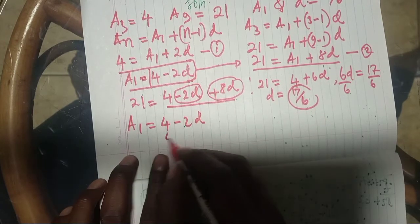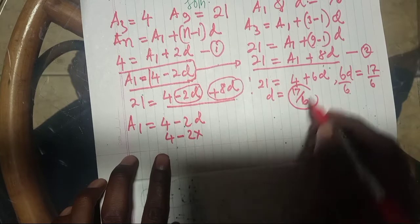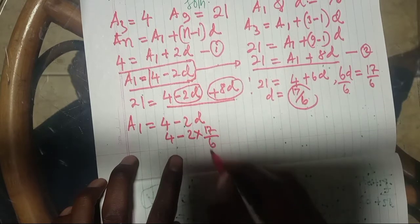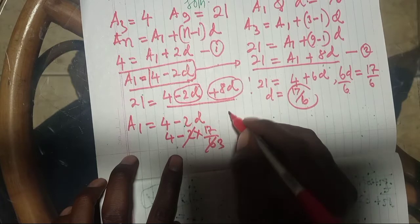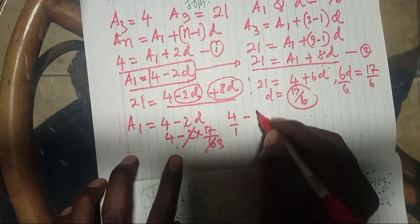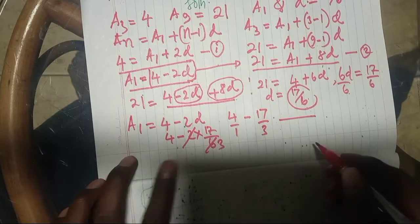But remember D, which will be 4 minus 2 times D, which is 17 over 6. Mathematically, this can be simplified. It is 4 over 1 minus 17 over 3.